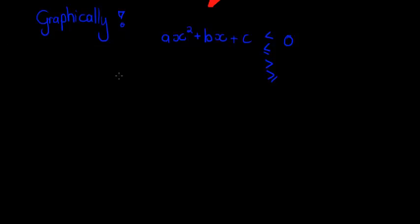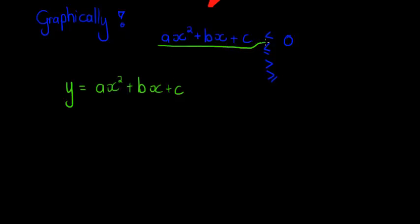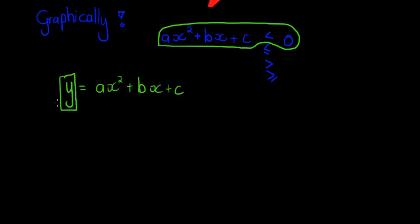What I'm going to show you is how we are going to use the graph of a parabola to solve the inequality — and you're going to see it is so simple. Let's assume that this was a graph: y equals ax squared plus bx plus c. And we have this expression with a less than sign. Now ax squared plus bx plus c can be replaced with y.